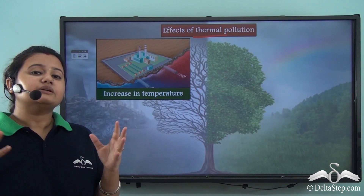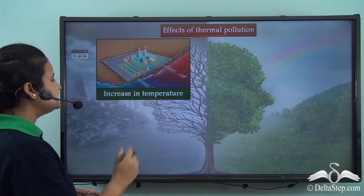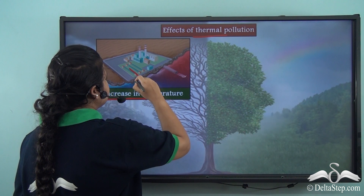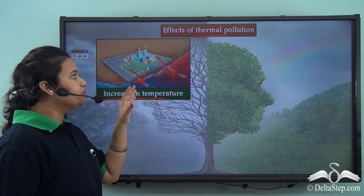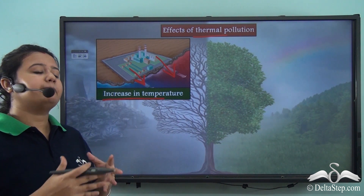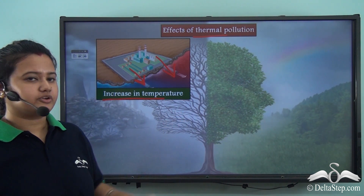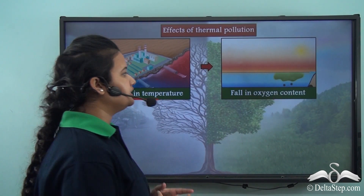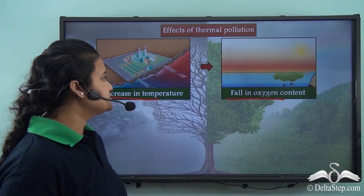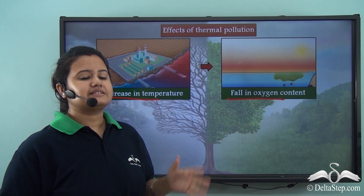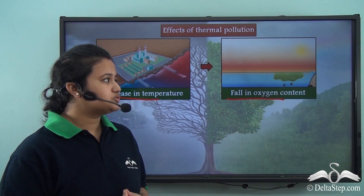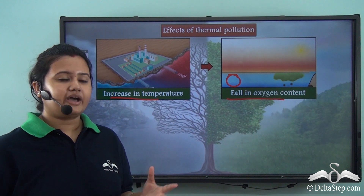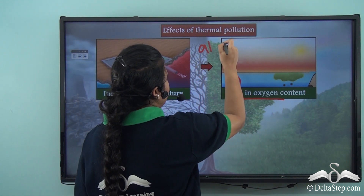The primary effect of thermal pollution is an increase in temperature. When industries release overheated untreated water into water bodies, it leads to a sudden and rapid rise in temperature. As a result of this temperature increase, there is a fall in the oxygen content of water bodies, because the rapid rise in temperature increases nutrient availability, facilitating excessive growth of algae — algal bloom.